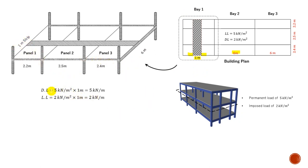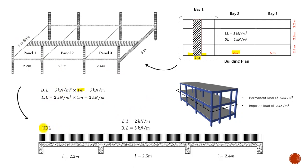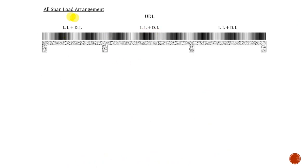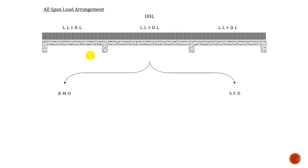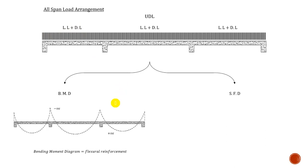If you design this one-meter strip, this one and the rest of the bay are going to be exactly the same. What I have for this entire floor — I go to Bay 1 and take just one-meter strip. I've got the dimensions and all the panels, and since I'm taking a one-meter strip I just multiply the dead load and live load by the one-meter strip, and what I end up having is a UDL. This is very similar to the design of beams.